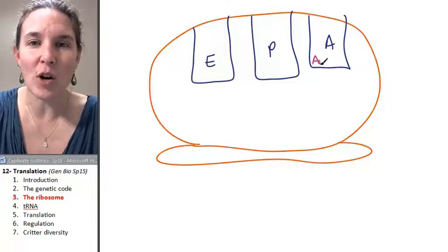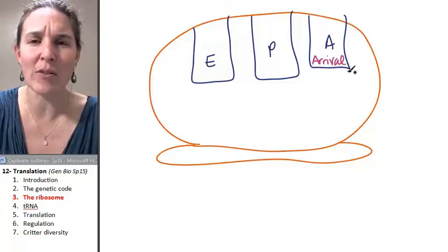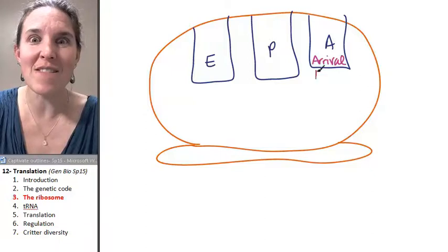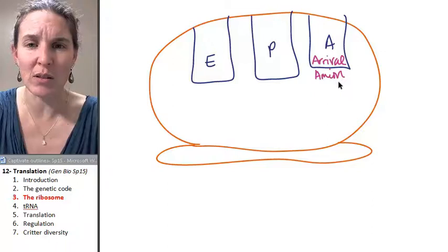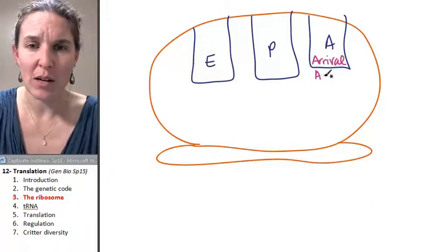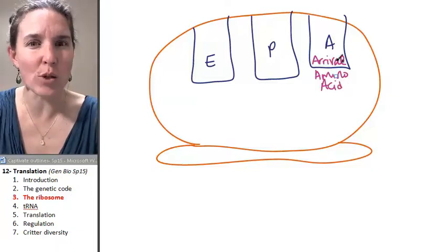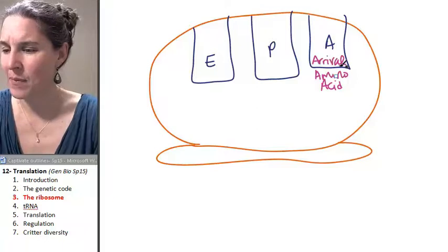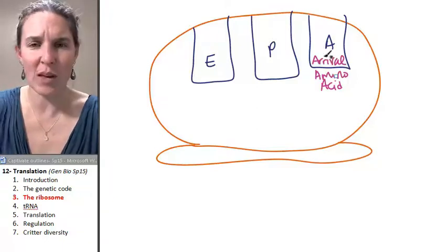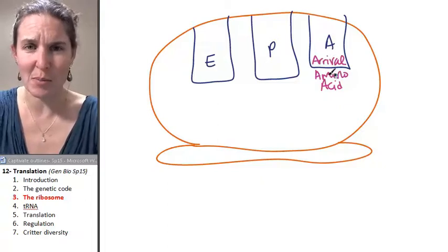A stands for arrival. Oh no, I don't know if it actually stands for arrival, but it's the arrival of the amino acid. So an amino acid is going to arrive in this place. I think it is the amino site where amino acids come.